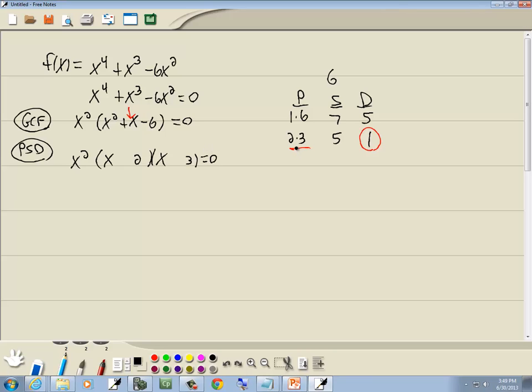Now our larger number in the P column that we're using, which is the 3, is always going to be the same sign as the middle term, which is positive. The number we circled in the difference column, D for different signs, means one will be positive, one will be negative. Since the 3 is positive, then the 2 has to be negative.